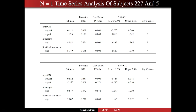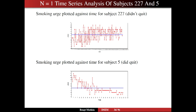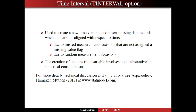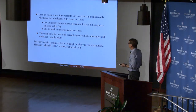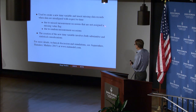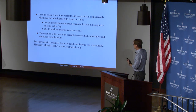One issue that comes up is the time-interval matter because the time points are random. Two individuals don't have the same distance between their different time points, and you want to take that into account because it affects the autocorrelation. So we want to create a new time variable and insert missing data records to align data with respect to time. The need for alignment could be due to missed measurement occasions without a missing value flag, or in this case due to random measurement occasions.